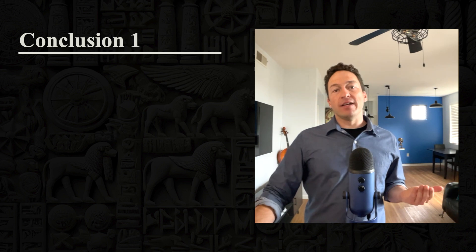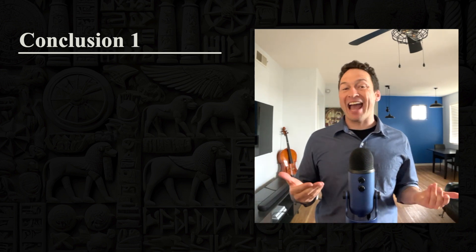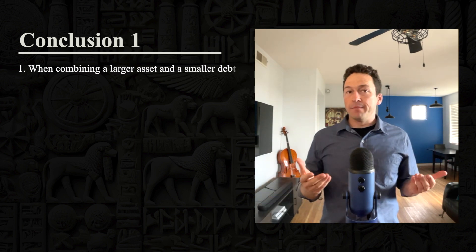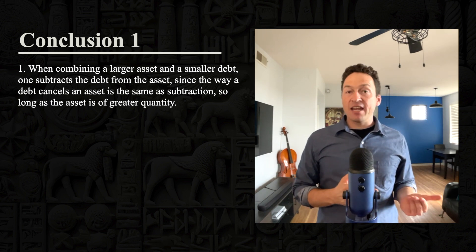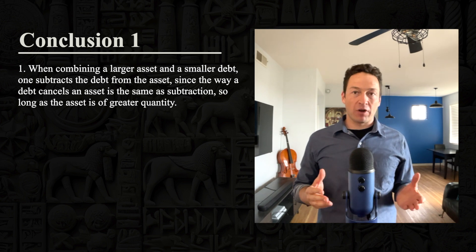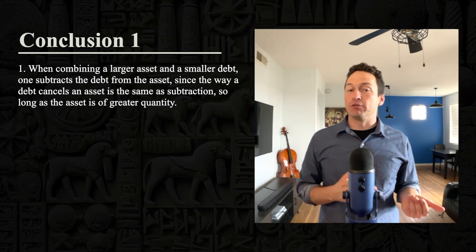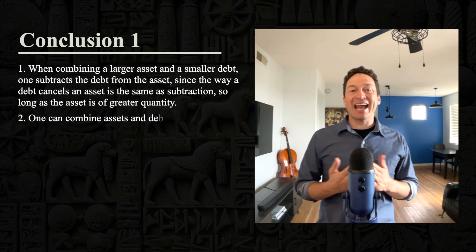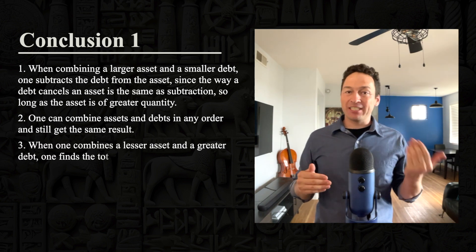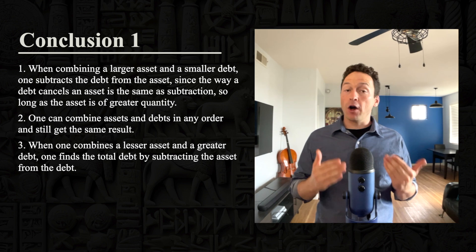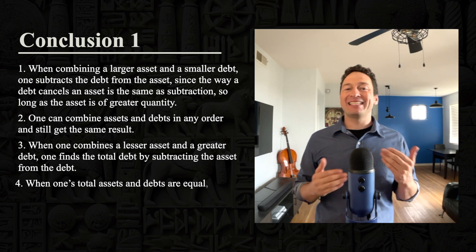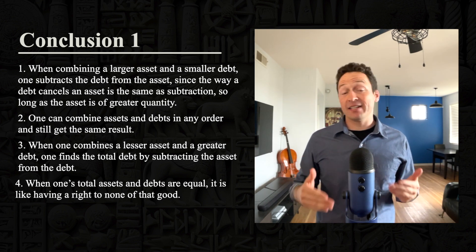Conclusion one. Ark has learned quite a few things about combining assets and debts. He came to four separate conclusions. Number one: when combining a larger asset and a smaller debt, one subtracts the debt from the asset, since the way a debt cancels an asset is the same as subtraction. Number two: one can combine assets and debts in any order and still get the same result. Number three: when one combines a lesser asset and a greater debt, one finds the total debt by subtracting the asset from the debt. And number four: when one's total assets and debts are equal, it is like having a right to none of that good.